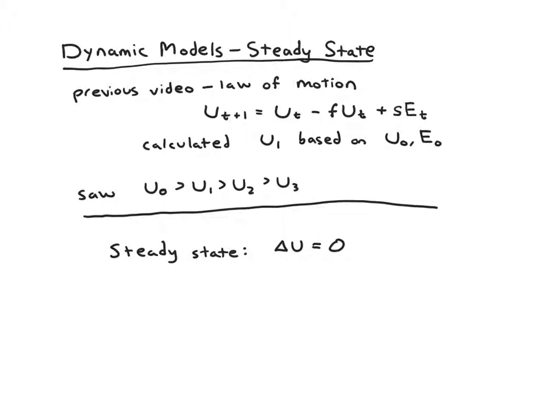Different endogenous variables have different values in each time period. So there would be a number of people unemployed in period 0, that would be u0, and then there's a number of people unemployed in period 1, that's u1.